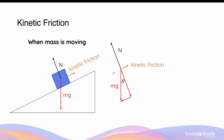What about when the mass is moving? This is very similar, but instead of static friction, we have kinetic friction acting up the slope. The kinetic friction balances the downward weight force component Mg sin theta, and the normal force balances with Mg cos theta again.